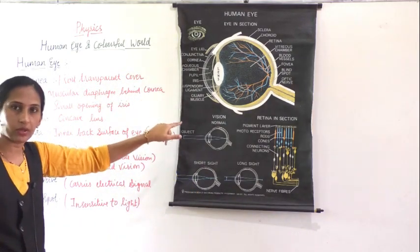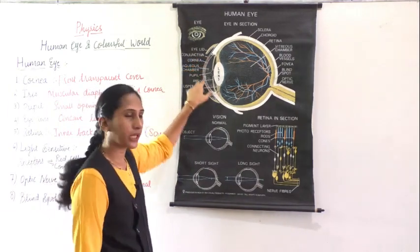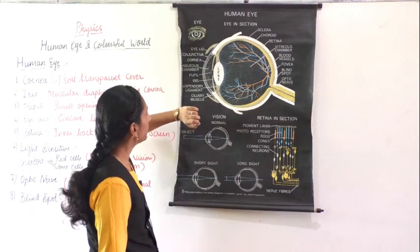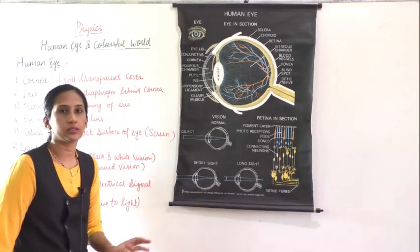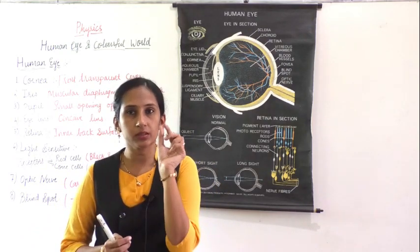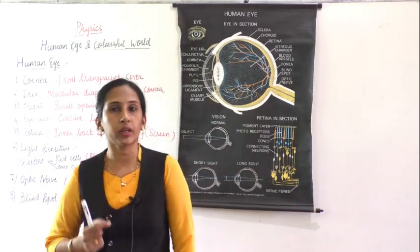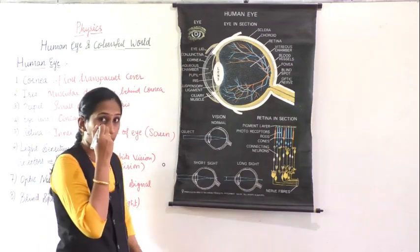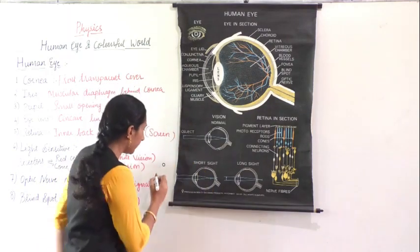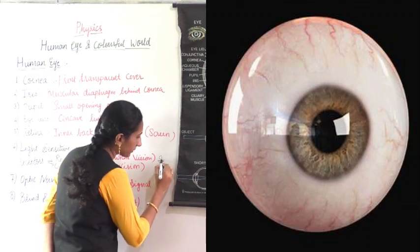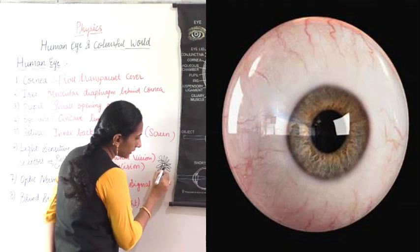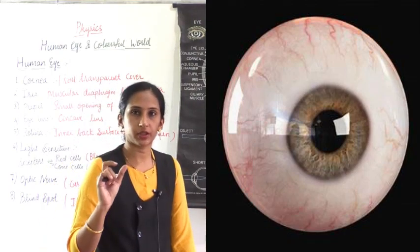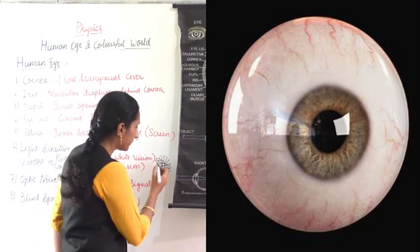So the first part is the cornea — the front transparent cover. The second is the iris, which is the muscular diaphragm behind the cornea. When you see yourself in the mirror, you can see a small spot between the iris — that is the pupil, a small hole-like opening.